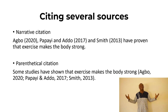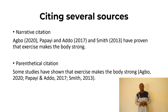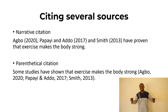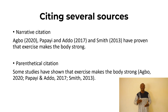Now let's look at instances where we cite several authors. Sometimes the information you come across has been read in quite a number of books or articles, so you want to cite all of them together. For example: Ado, 2020; Papai and Ado, 2017; and Smith, 2013, have proven that exercise makes the body strong. In a parenthetical reference: 'Some studies have shown that exercise makes the body strong,' then in brackets: Ado, 2020; Papai and Ado, 2017; Smith, 2013. Do it in alphabetical order.